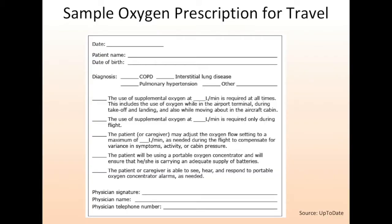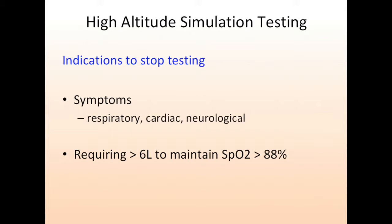If the patient requires a prescription for oxygen, it should have the diagnosis and the amount of oxygen required during flight. The patient should also check with the airline for further requirements prior to travel and to make sure that they have an approved portable oxygen concentrator. If at any point during testing the patient develops respiratory, cardiac, or neurological symptoms, or if they are requiring more than 6 liters of supplemental oxygen to maintain an SpO2 greater than 88%, testing should be stopped.